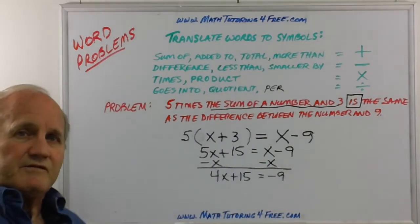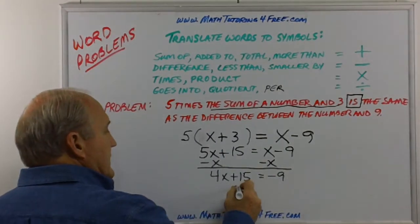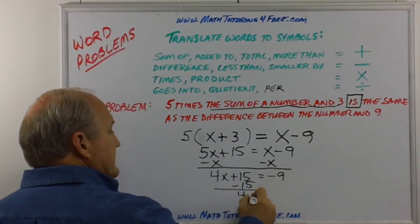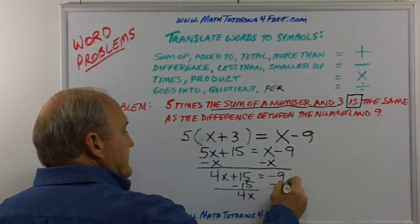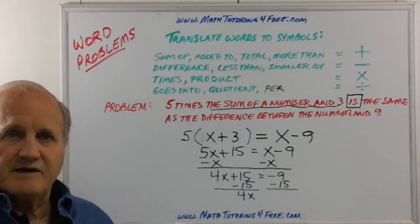How do we get 15 over the other side? We do the opposite. Minus 15. That leaves just 4X on this side of the equation. Whatever we do to the left side we do to the right side as well. A negative 15 and a negative 9.